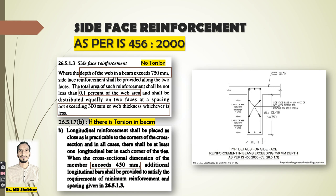According to Clause 26.513 to 27.517, if there will be no torsion in the beam, then in this case Side Face Reinforcement will be necessary only if the depth of the beam exceeds the specified limit. The amount of reinforcement to be provided is 0.1% of the cross-section area of the web, in both cases.